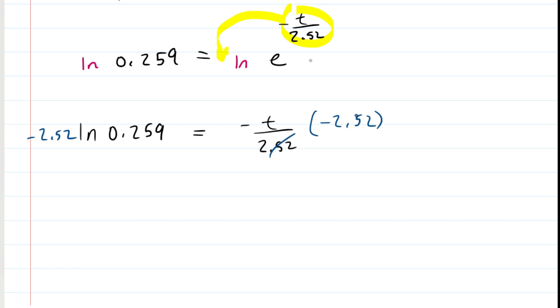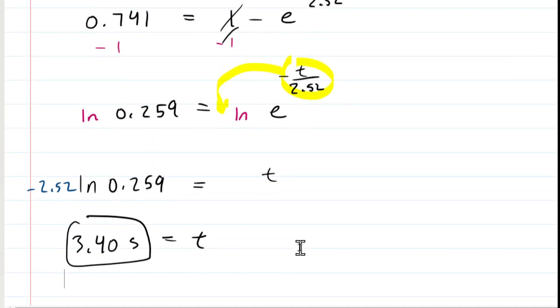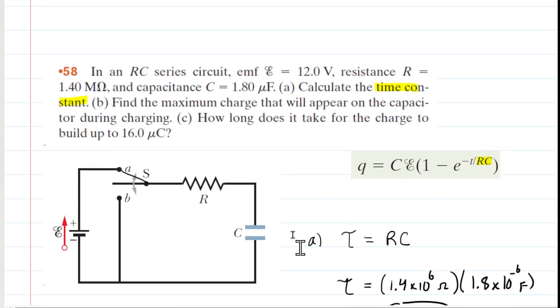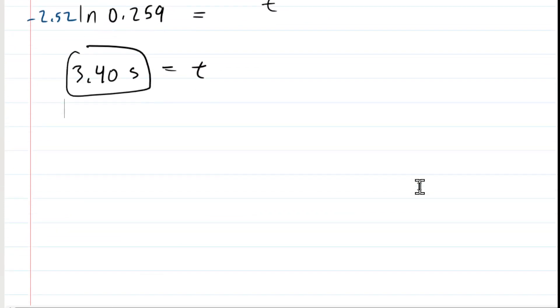And doing so cancels the 2.52. And then the negative times the negative becomes a positive. So in essence, we're left with positive t. And when we compute the left-hand side, we get about 3.40 seconds. So we would have to close that switch and then wait about 3.4 seconds for the capacitor to charge up to a 16 microcoulomb charge. And that is the correct answer to part C of the question.